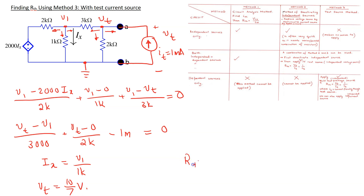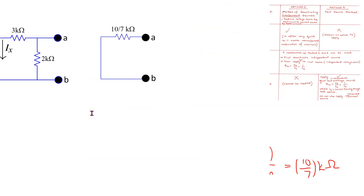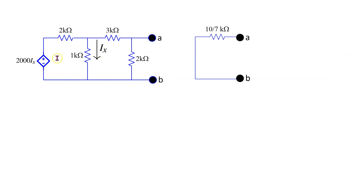Using this we can find R-Thevenin. R-Thevenin is Vt over IT, so this is (10/7) over 1 milli, which comes out to 10 over 7 kilo-ohms, as before. Choosing either a voltage or a current test source with any arbitrary magnitude does not impact the final answer. For circuits containing only dependent sources, V-Thevenin is 0 (denoted by a short circuit) and R-Thevenin is 10 over 7 kilo-ohms.